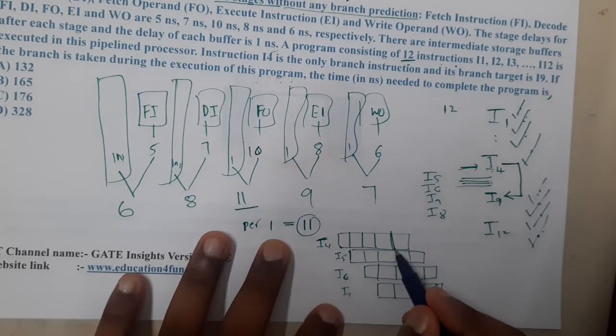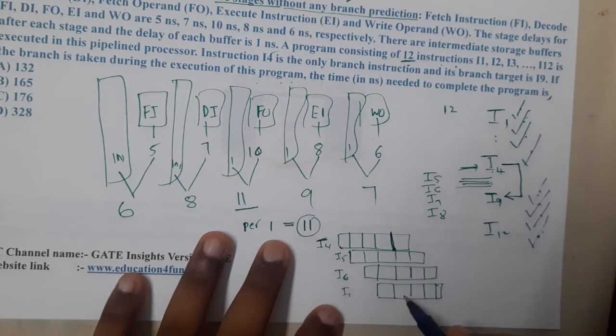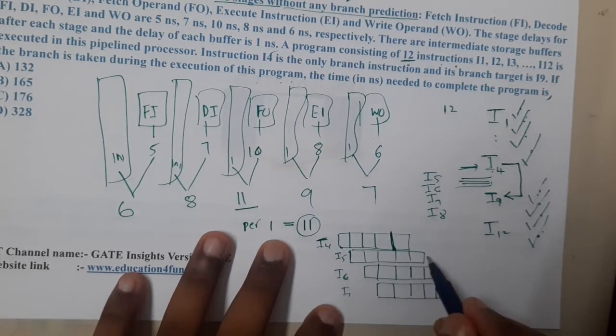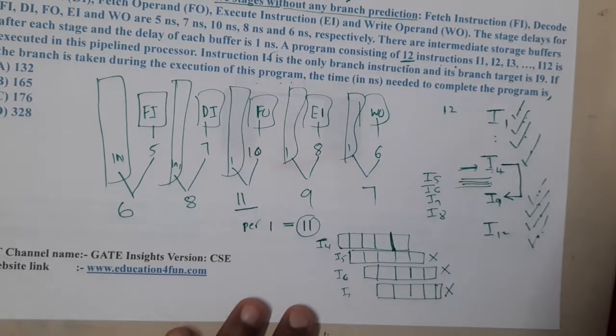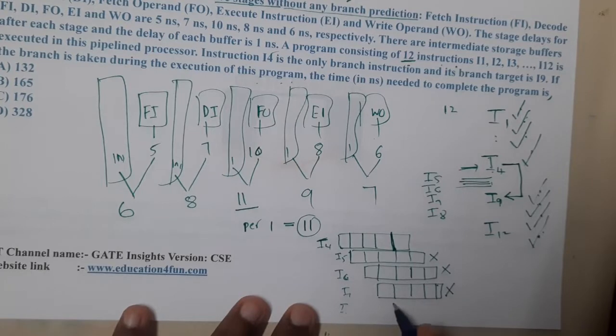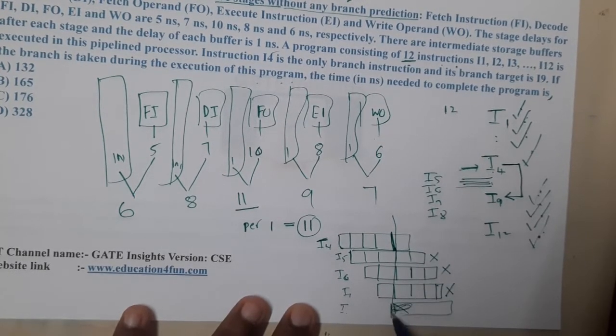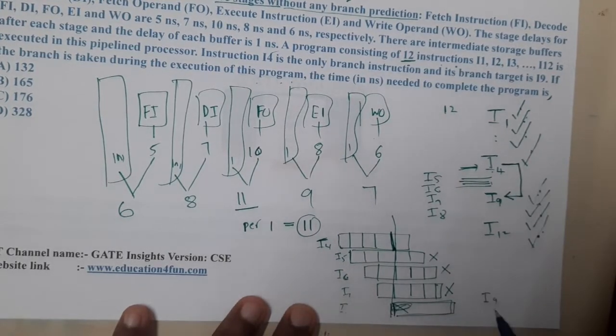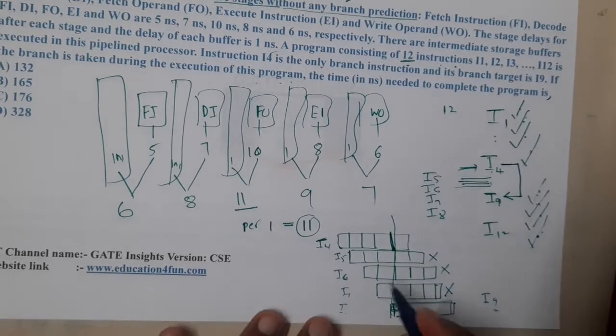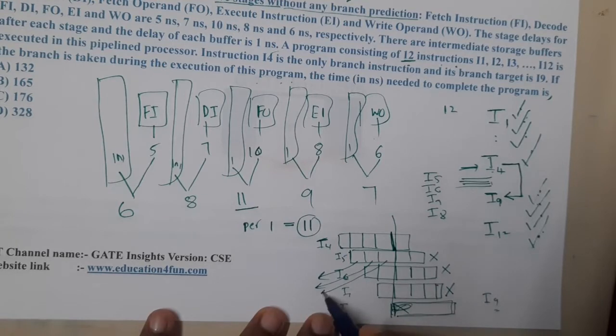Will I8 start? Basically at what time will you know? Once this step is done, once execution is done, we will understand that there is no need of solving these things. So once these three steps are indirectly wasted. I8 will not start here. I9 will start. How many stages we have wasted? Here I have wasted one stage, two stages, and three stages. So indirectly three stages have been wasted.